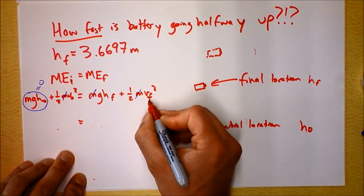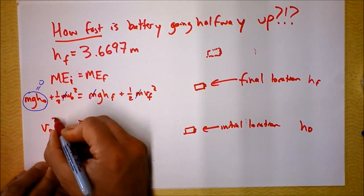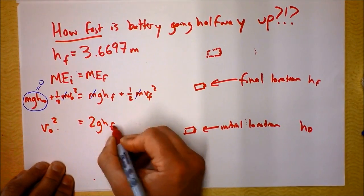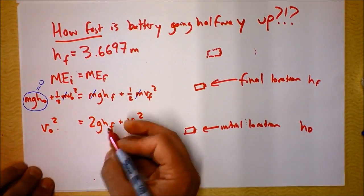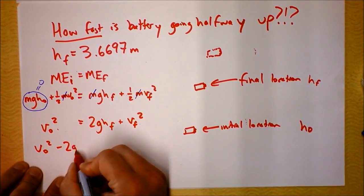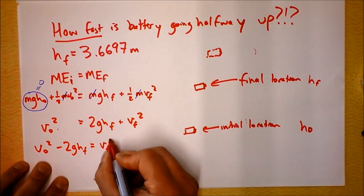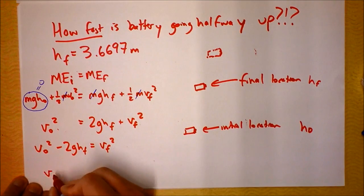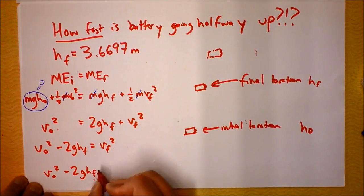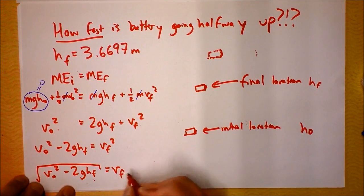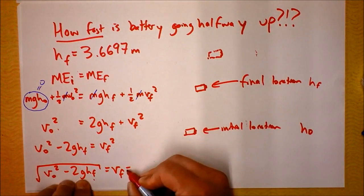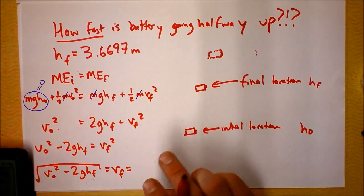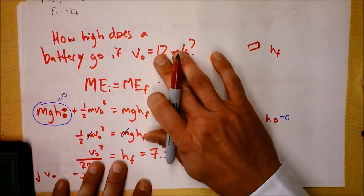V naught squared is 2GHf plus Vf squared. I'm going to subtract this term. V naught squared minus 2GHf equals Vf squared. Taking the square root of both sides, V final equals the square root of V naught squared minus 2GHf. So the final velocity is less than the initial velocity by this amount inside that square root.